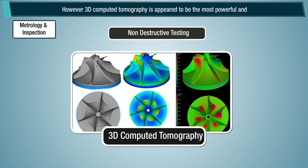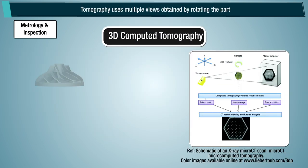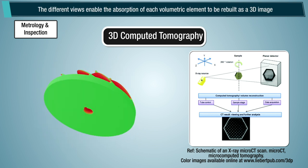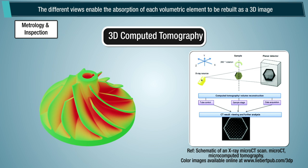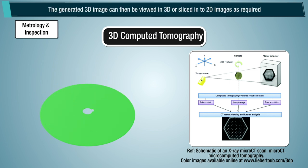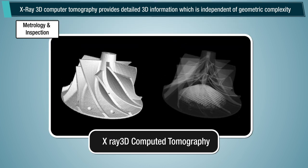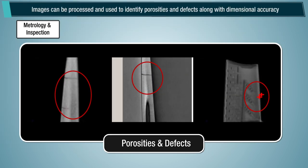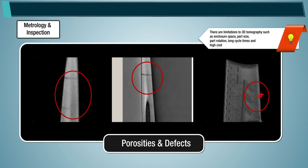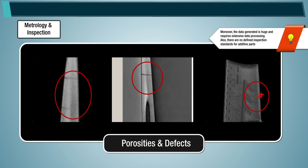3D computed tomography appears to be the most powerful and widely used non-destructive testing technique for inspecting additive parts. Tomography uses multiple views obtained by rotating the part; different views enable the absorption of each volumetric element to be rebuilt as a 3D image, which can be viewed in 3D or sliced into 2D images to identify porosities and defects. X-ray 3D computed tomography provides detailed 3D information independent of geometric complexity. Note: limitations include enclosure space, part size, part rotation, long cycle times, high cost, huge data processing requirements, and the absence of defined inspection standards for additive parts.